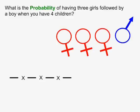In this example, what is the probability of having three girls followed by a boy when you have four children? Having four children is four events, so we write four fraction lines with multiplication symbols between them.